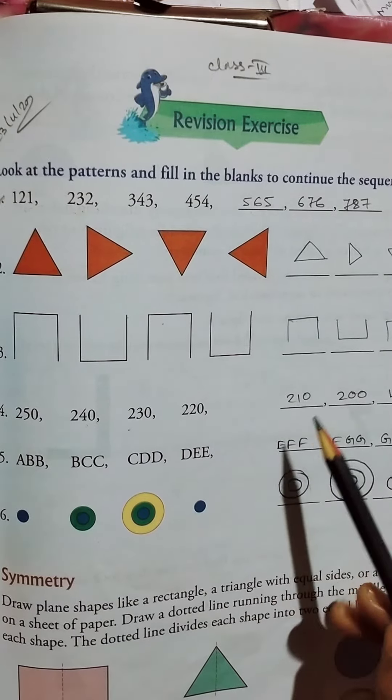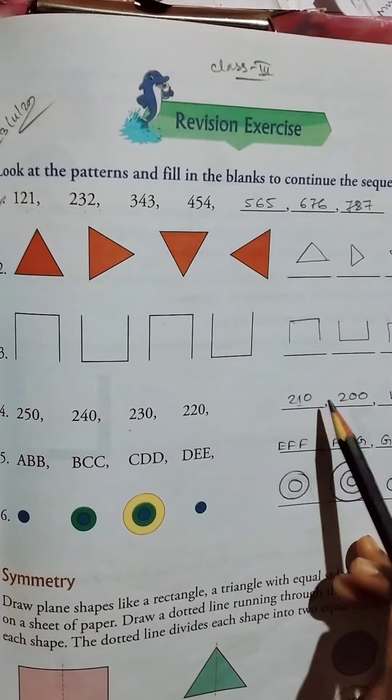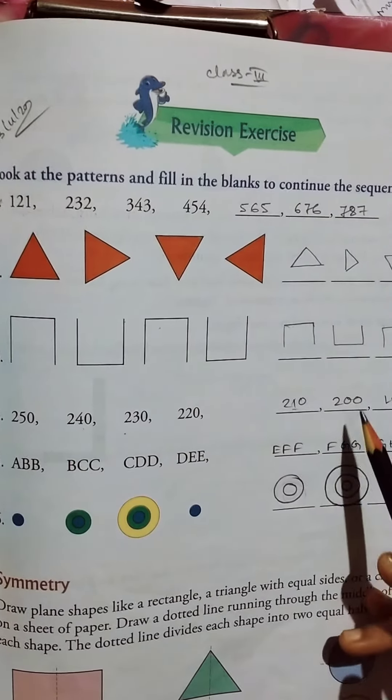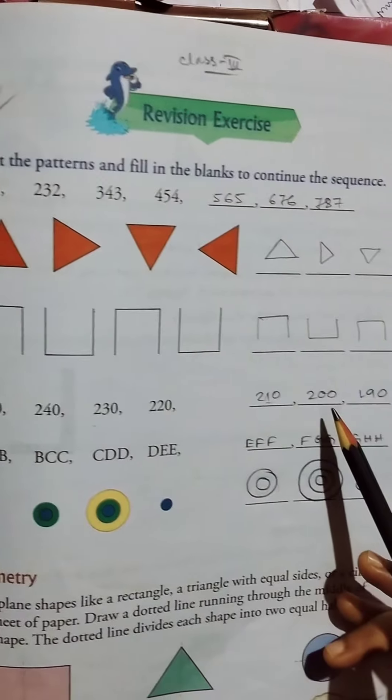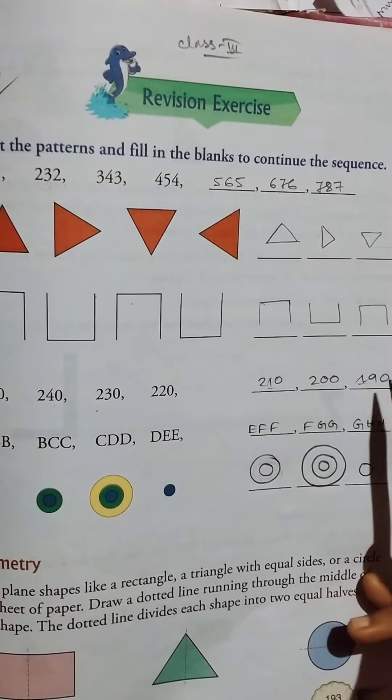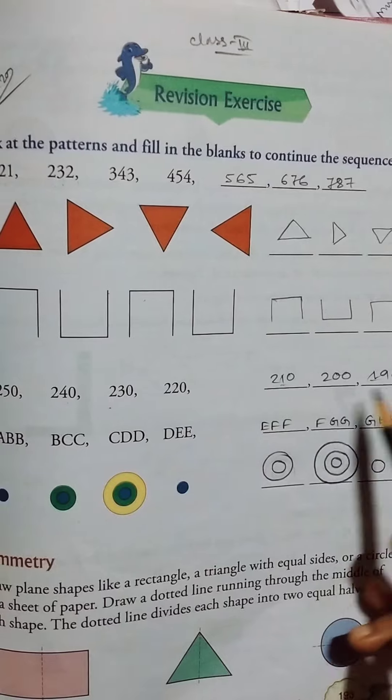Then 210 minus 10 equals 200, 200 minus 10 equals 190. Okay, then...